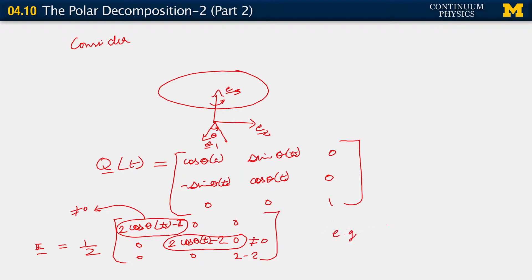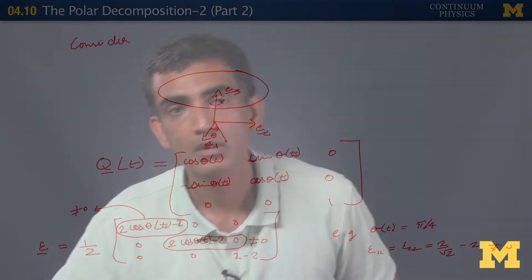Example—I just realized that I've been calling this e, but the whole point is that this is epsilon, the small strain tensor. So if theta as a function of time equals pi over 4, what we're seeing is that epsilon 1,1 equals epsilon 2,2, which turns out to be 2 over root 2 minus 2, which is very different from 0.